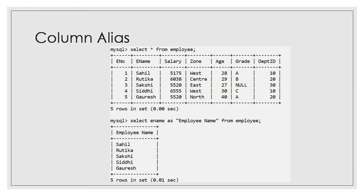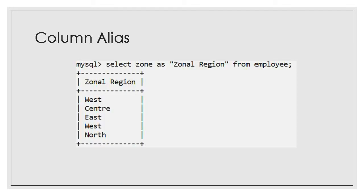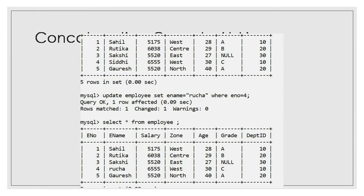If I want to update data, UPDATE is also a DML query used for updating data. If I say: UPDATE employee SET ename = 'Rucha' WHERE eno = 4, those having employee number 4 will have their ename changed to Rucha. You can see in the record now employee number four is having name Rucha — initially it was Siddhi.